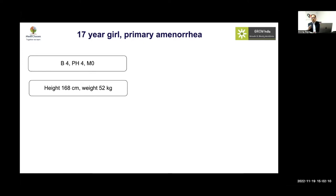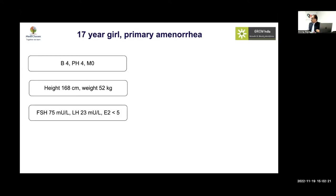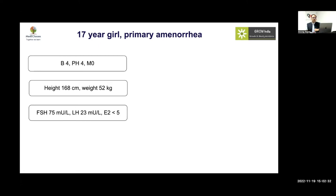All four individuals we'll discuss today were either tall or had the potential to be tall — their bone ages were open and they had delayed bone age. FSH was high, LH was high, and estradiol was low. Our diagnosis of hypergonadotropic hypogonadism was established and she was started on routine replacement therapy.